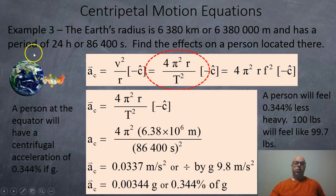Okay, third example using the formula we haven't used yet. The radius of the earth is 6,380 kilometers. So from the center of the earth to the surface is approximately 6,380,000 meters, or in scientific notation, 6.38 times 10 to the 6. The period, the time it takes to spin around once is 24 hours, which is 86,400 seconds. So how would that affect somebody? What would the acceleration be? So in this case, we're going to be using the one with period.